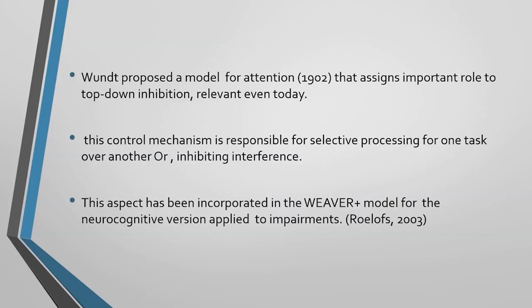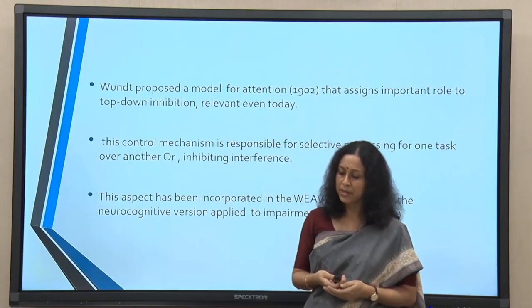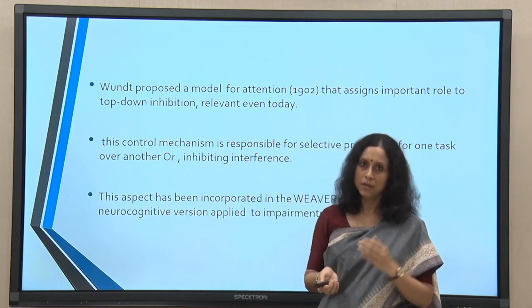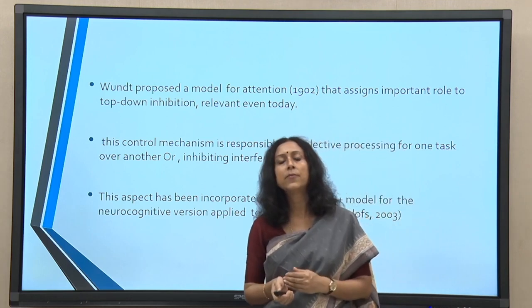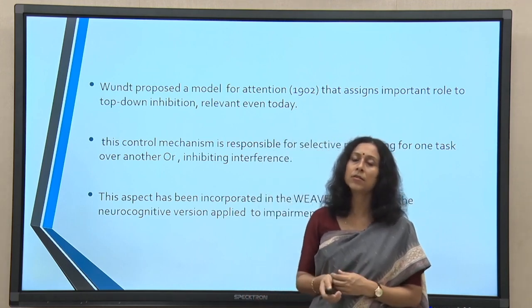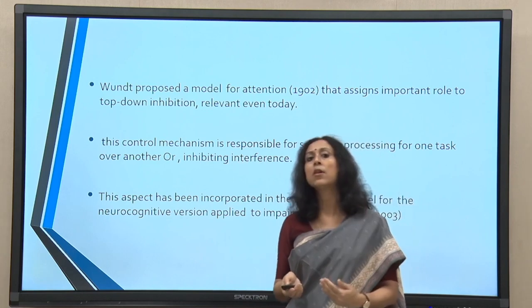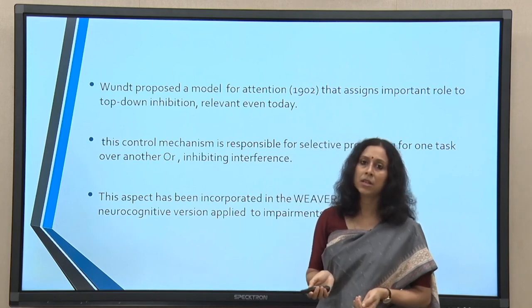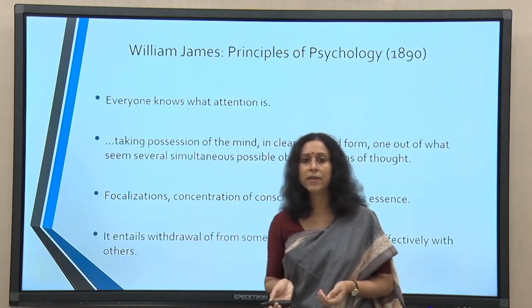This idea has remained relevant even today. It has been incorporated in a new model called the Weaver Plus model for the neurocognitive version of attention, which is applied to impairments. This model was proposed by Roloff in 2003. Wundt is thus credited as the first experimental psychologist to give a model of attention and specifically to talk about top-down inhibitory mechanisms, which remain relevant even today.